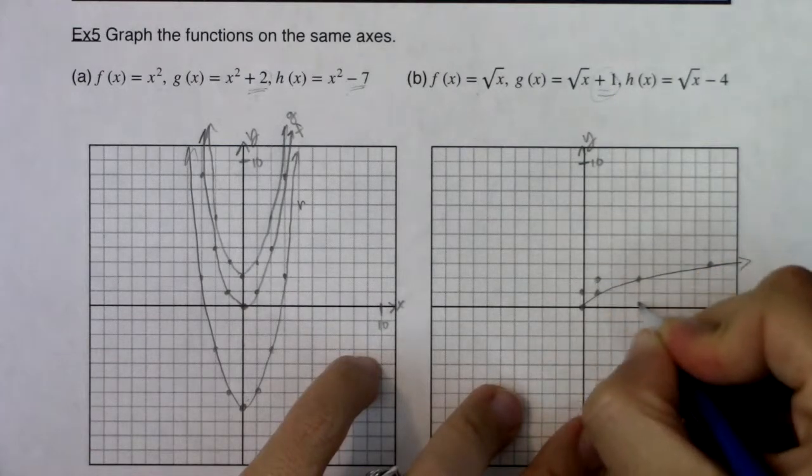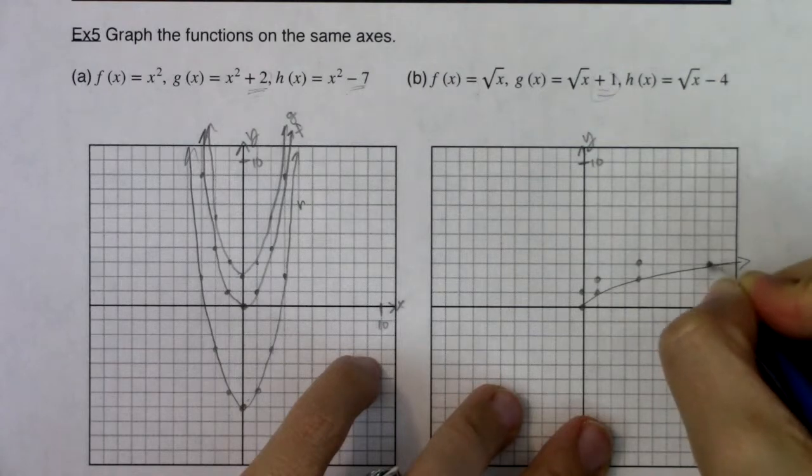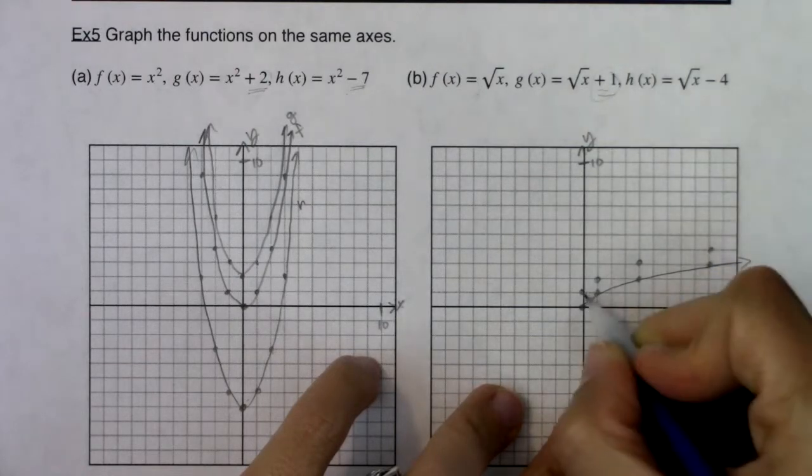Instead of one, one, I'm going to go one, two. Instead of four, two, I'm going to go four, three. And instead of nine, three, I'm going to go nine, four. So there is g of x, keeping in mind that was f.